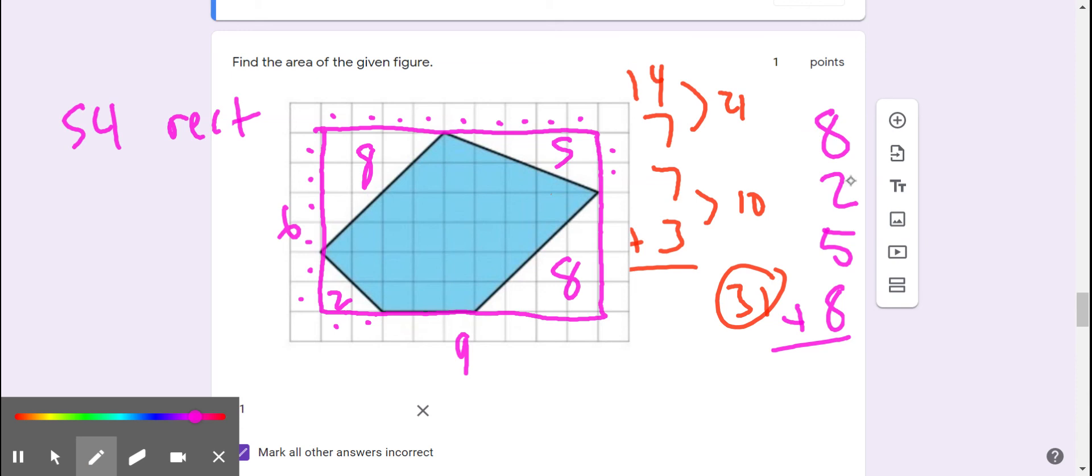Eight and two is 10. Five and eight—eight and two is 10. Five plus eight is 13. Ten plus 13 is 23. So the area of all the white space is 23 square units.